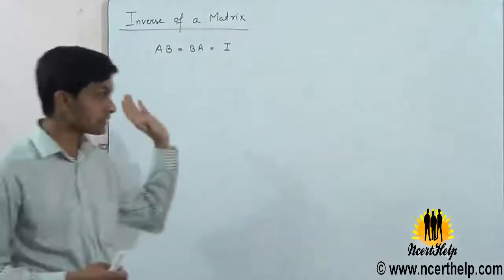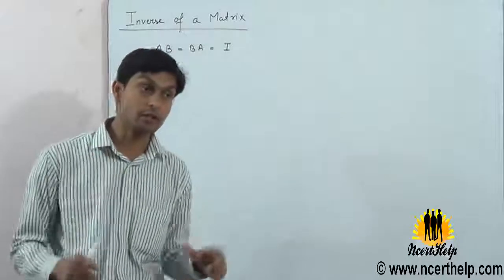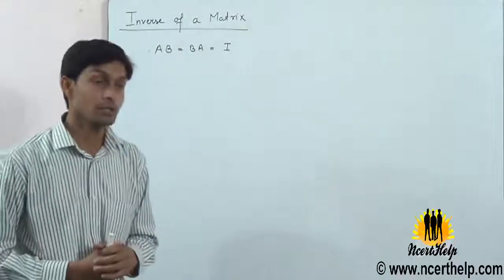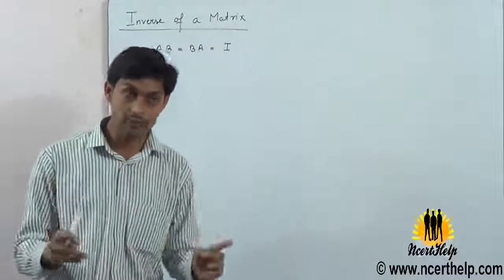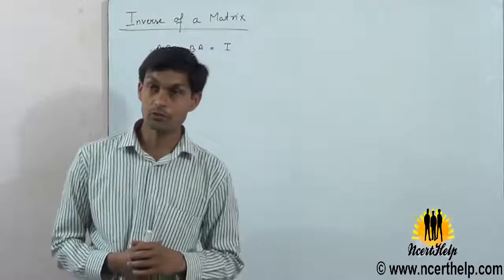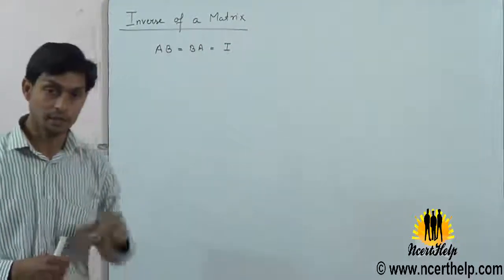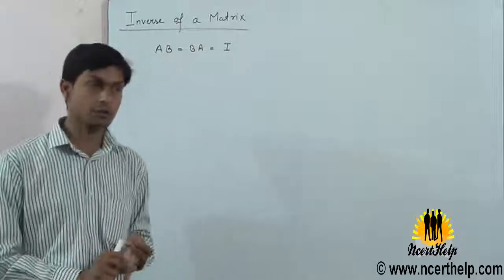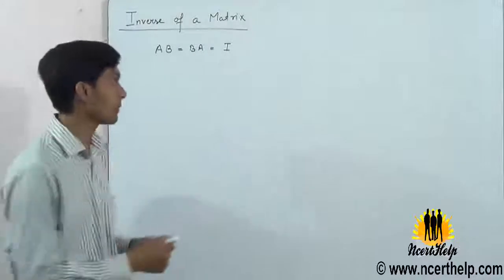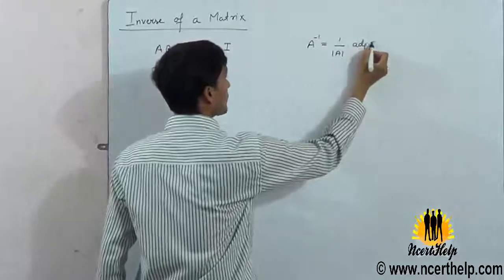A singular matrix is one where the determinant is zero. Such a matrix does not have an inverse. In this chapter, I will tell you two methods: row transformation and column transformation. In the fourth chapter, we will learn the inverse using the determinant method.